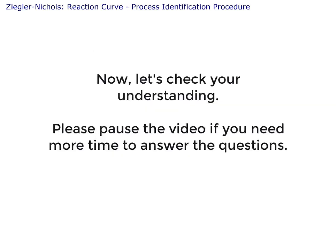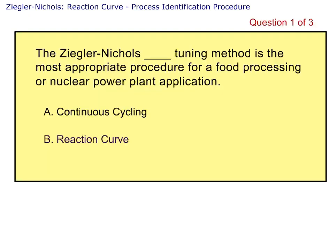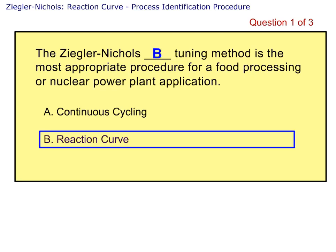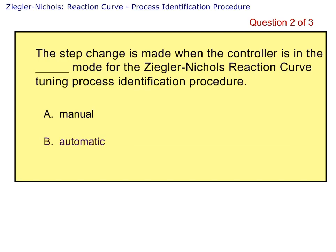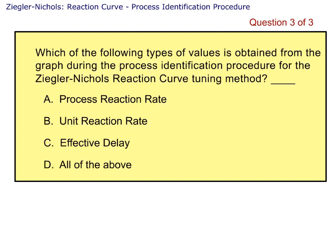Now let's check your understanding. The Ziegler-Nichols reaction curve tuning method is the most appropriate procedure for a food processing or nuclear power plant application. The step change is made when the controller is in the manual mode for the Ziegler-Nichols reaction curve tuning process identification procedure. Which of the following types of values is obtained from the graph during the process identification procedure for the Ziegler-Nichols reaction curve tuning method? The correct answer is all of the above: the process reaction rate, the unit reaction rate, and the effective delay.